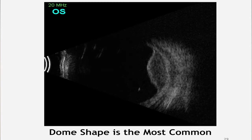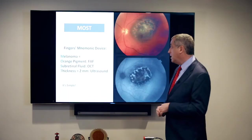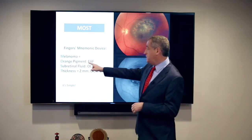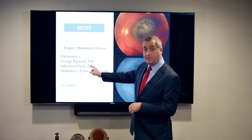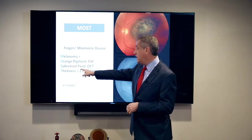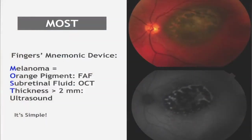In summary, MOST means: orange pigment, best seen on fundus autofluorescent imaging; subretinal fluid, most reliably seen on OCT; and thickness of more than 2 millimeters by ultrasound. It's simple.